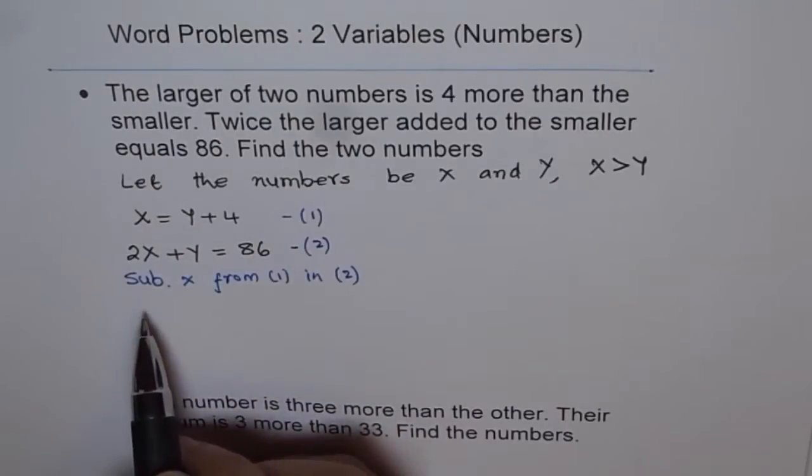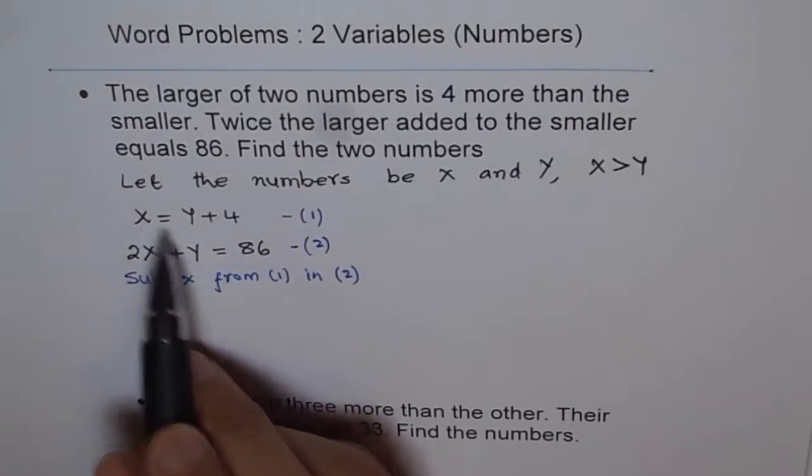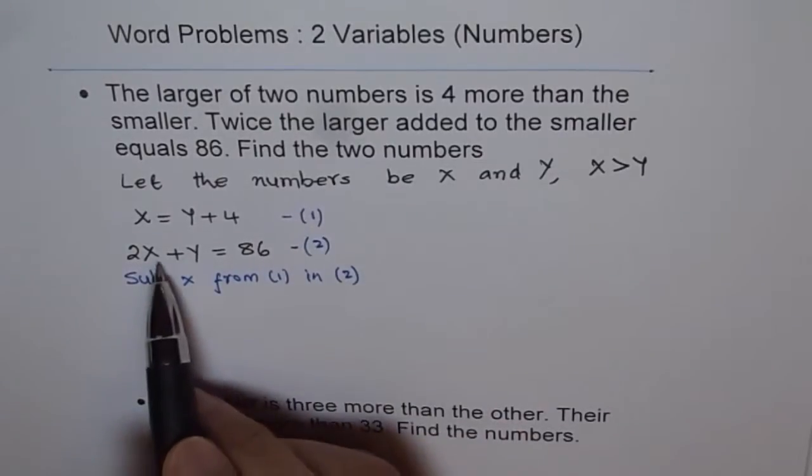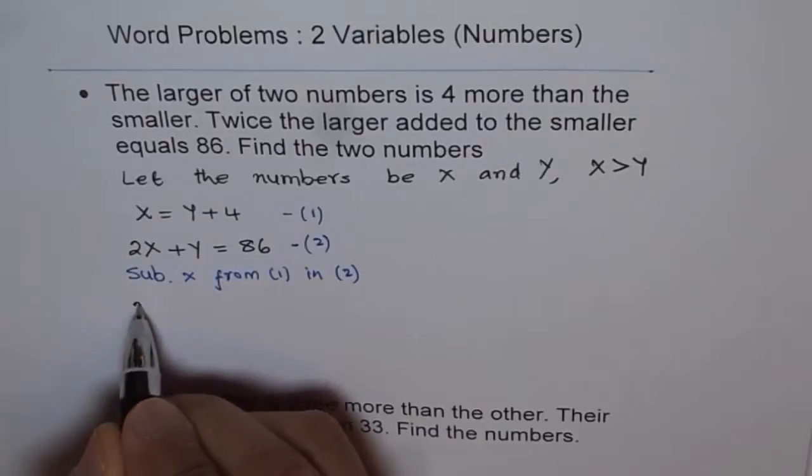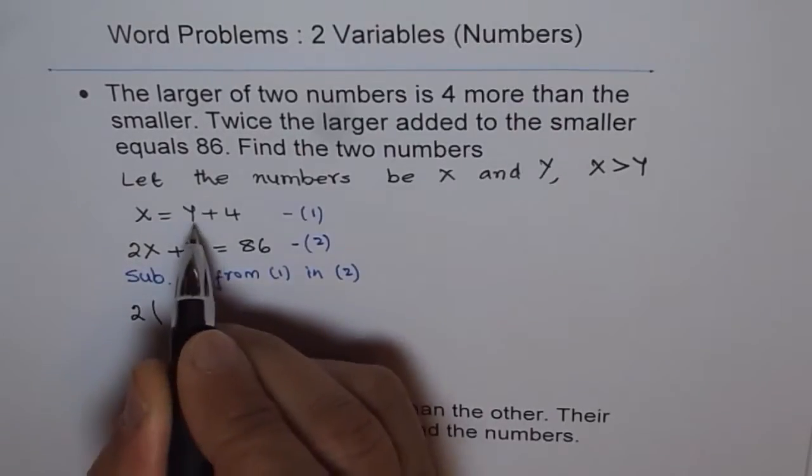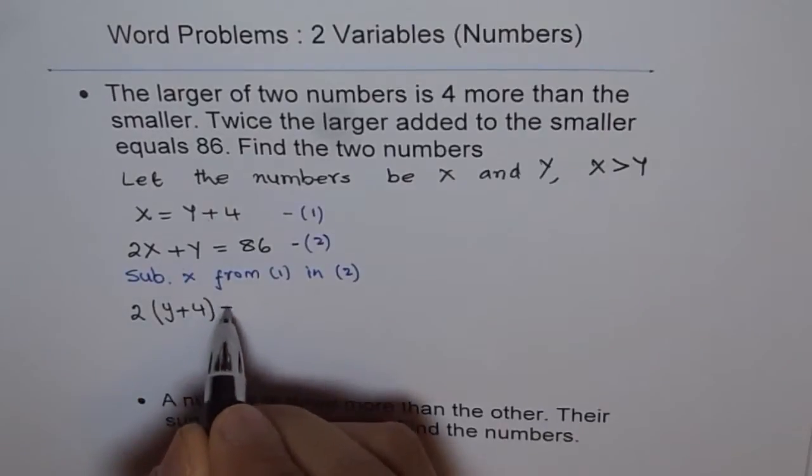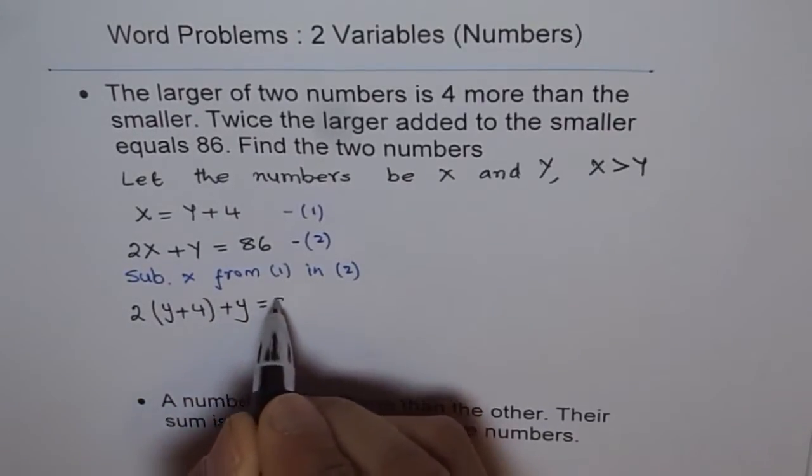So the step here is to substitute x, which is y plus 4, from equation 1 in equation 2. Then see what happens. So instead of x here, I will write y plus 4. So we get 2 times (y plus 4) plus y equals to 86.